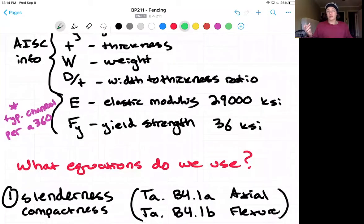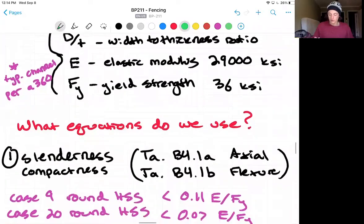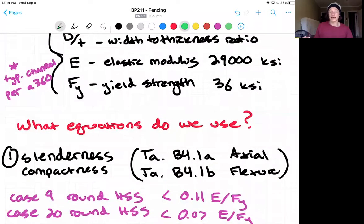Now, we need to find which equations to use. In order to first do this, we need to check slenderness and compactness of the section. So table B4.1a and B4.1b for axial and flexure failure modes. And we're going to use case 9 when discussing axial and case 20 when discussing flexure, because these are both the cases for the round HSS section.